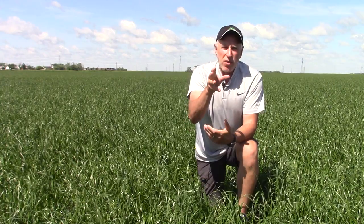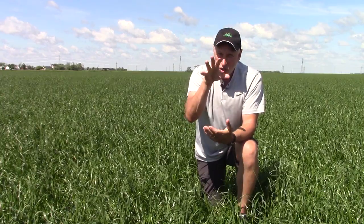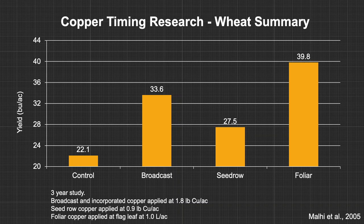So what is the best way to manage your copper fertility program? We can start with a soil application, but as you can see in this data, if we go just with a soil application it's better to do broadcast. A banded application is okay, but we really need to broadcast that copper across the soil, and a lot of people aren't capable of doing that.